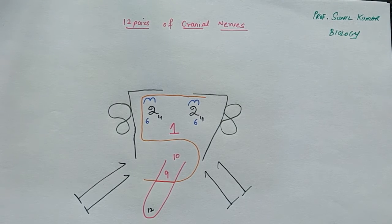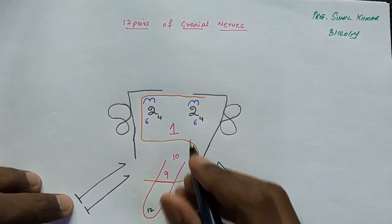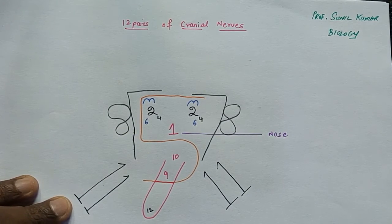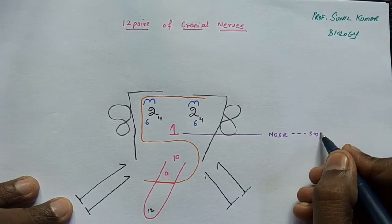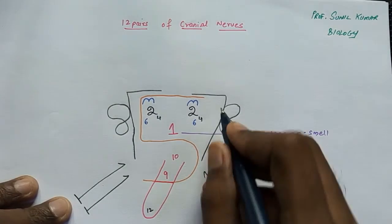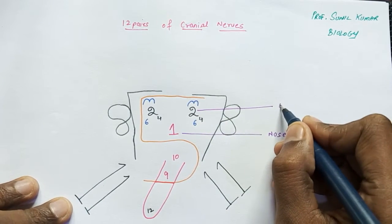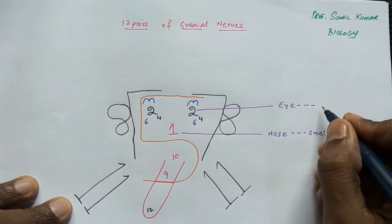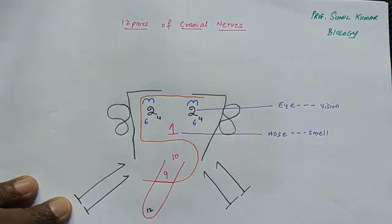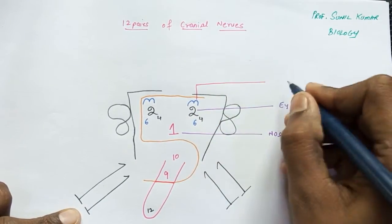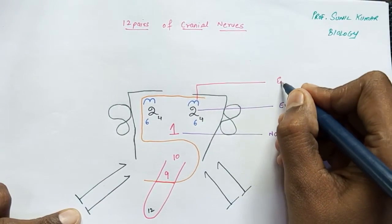Now let's understand the functions. Number one is placed as the nose of the face, so it is related to the sense of smell — that is the olfactory nerve. Number two is the eye, so it is the optic nerve related to vision. Number three is written on the eyebrows — the oculomotor — which is also related to the eye but specifically for movement of the eye.